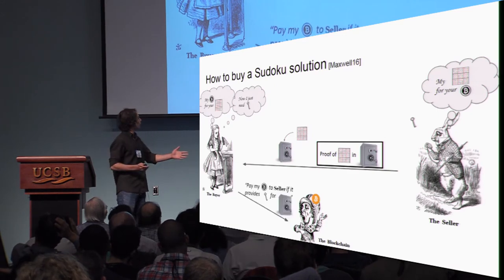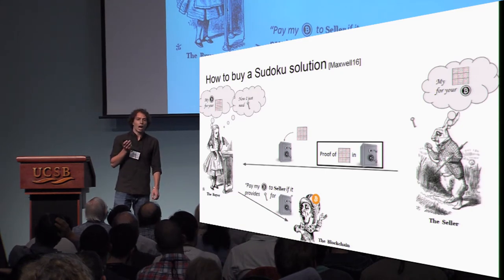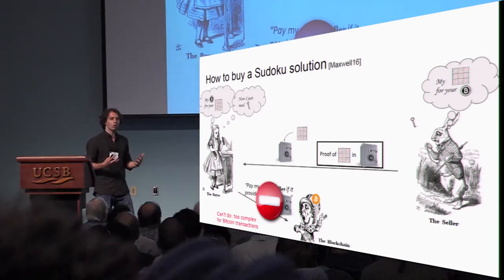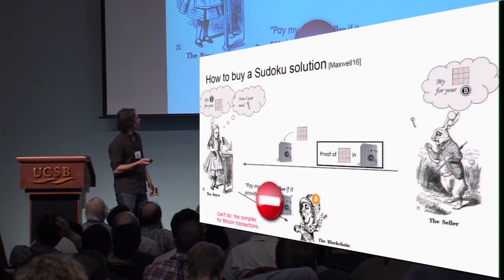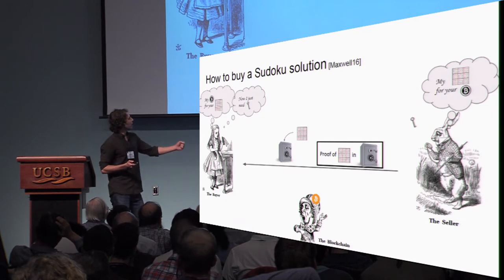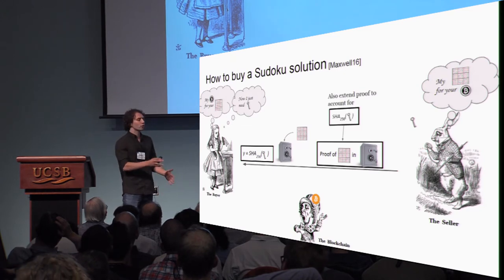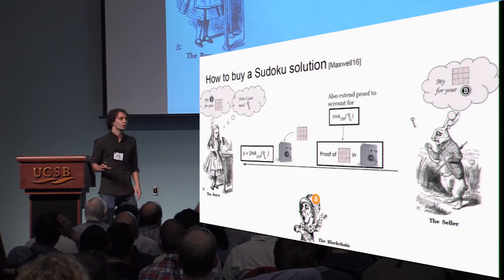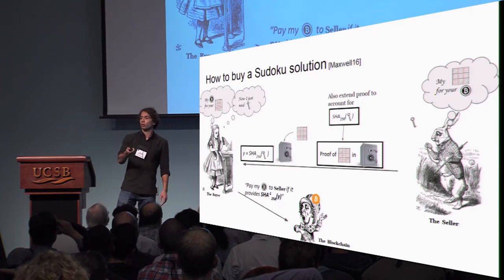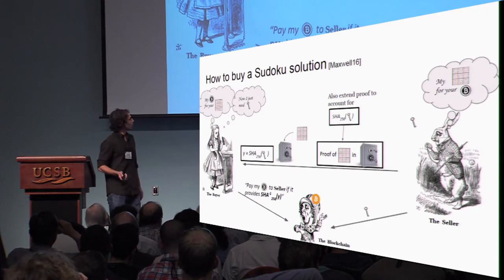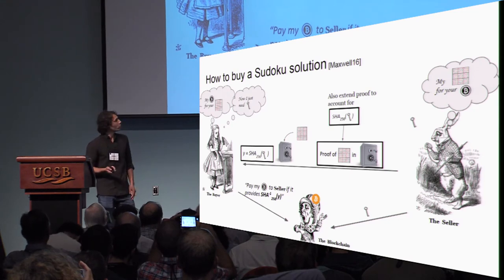You make a transaction that says: blockchain, please pay this seller as soon as he provides the key. Unfortunately, in the Bitcoin context, this is too complex for the Bitcoin scripting language. So instead, the seller also gives you a share of the key and extends the proof to show the key is related in a specific manner. Now you can say: blockchain, pay the seller if he provides the pre-image of this string — I know it's going to work. The seller sends the key and everybody's happy, and the seller can use the transaction at that point.